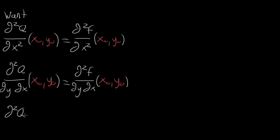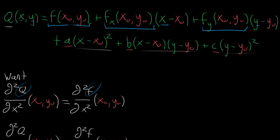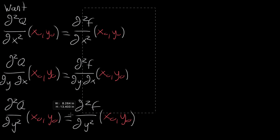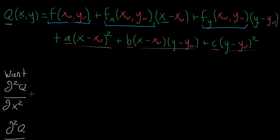The final condition is that we want the partial derivative with respect to y taken twice in a row, evaluated at the point, to match that of F. Now let's compute: we take the partial derivative of Q with respect to x, one term at a time. The first term is a constant, so that goes to zero. The second term has x linearly, giving the constant f_x(x₀, y₀). The term with no x goes to zero.